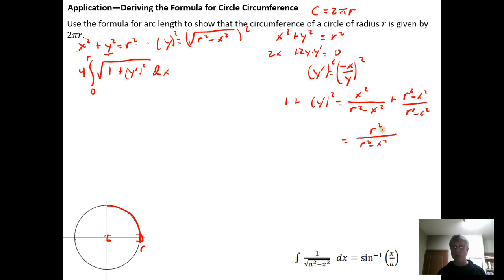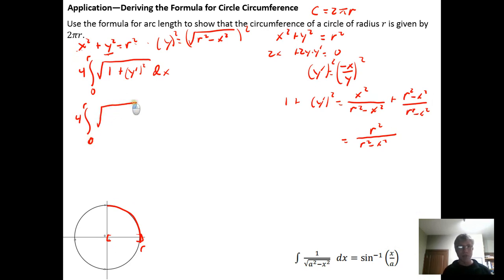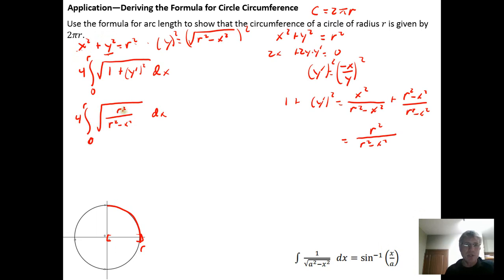Placing this under the square root in the arc length formula, we get four times the integral from zero to r of the square root of r squared over (r squared minus x squared) dx. The square root of r squared is just r, so this simplifies to four times the integral from zero to r of r over the square root of r squared minus x squared dx. Since r is a constant, we can factor it out.